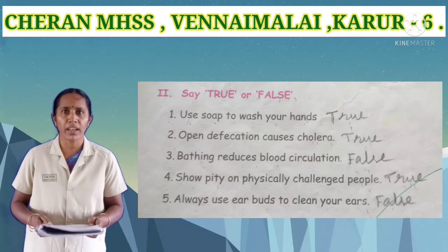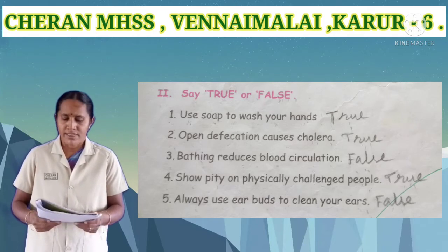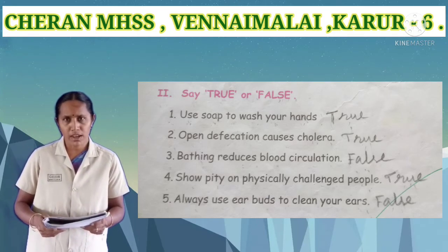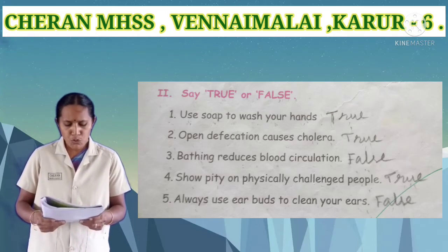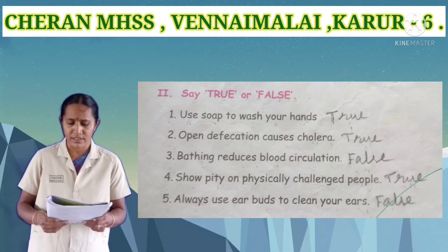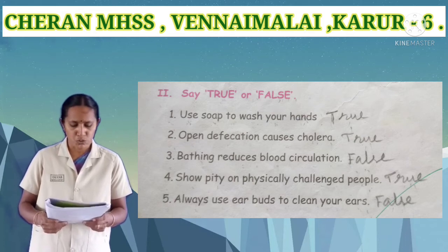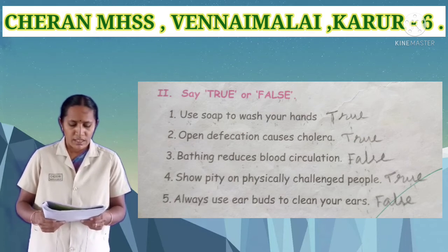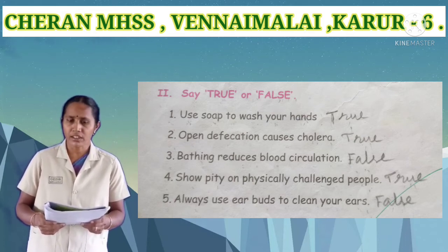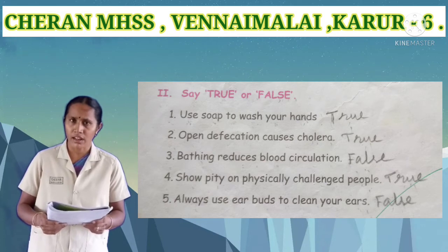Fourth Roman numeral: say true or false. First one: use soap to wash your hands. Answer: true. Second one: open defecation causes cholera. Answer: true.